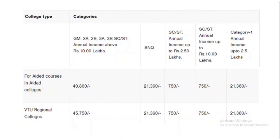For aided colleges — aided means the government provides some fund, whereas unaided is a completely private college with no government support, which is why fees differ significantly. For aided courses: General Merit/2A/2B/3A/3B fee is ₹40,860; SNQ quota ₹21,360; SC/ST ₹750; and Category 1 is ₹21,360.